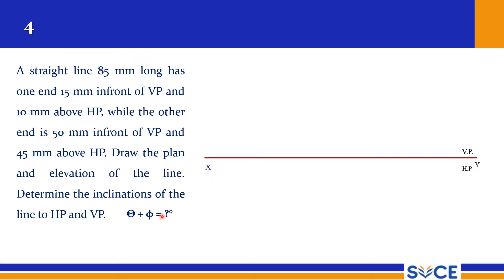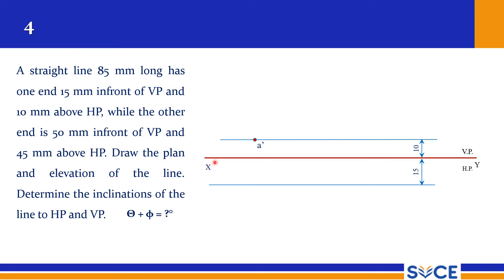As usual, we start with the XY reference line. We notate VP and HP for first angle projection. The first end is 10 mm above HP — draw a thin line and mark A-dash somewhere on the left-hand side. Then 15 mm in front of VP — draw another thin line and exactly below A-dash draw a projector and mark point A. This is our fixed point, and with respect to this we are going to rotate the second point to get theta and phi.